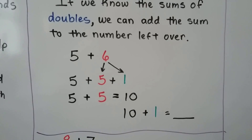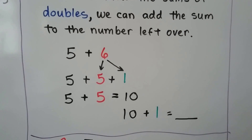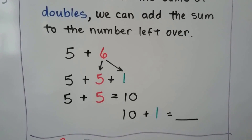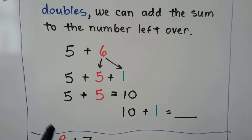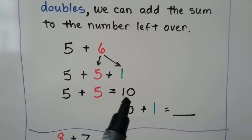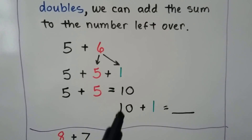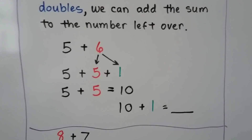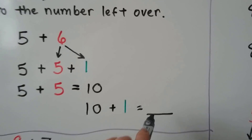5 plus 6: we break the 6 into a 5 plus 1. We have doubles — 5 plus 5. And if we know 5 plus 5 is equal to 10, we add the one more: 10 plus 1. That's equal to 11.